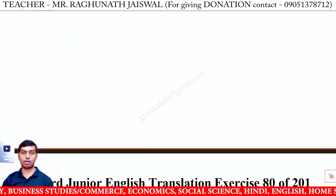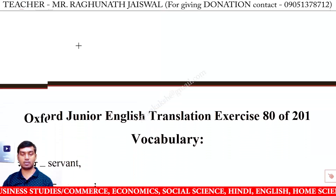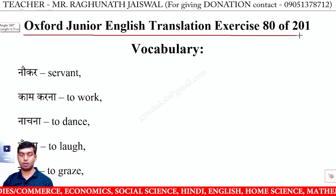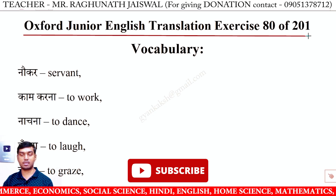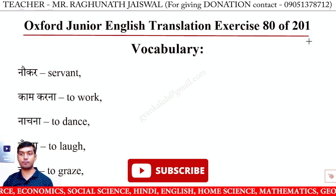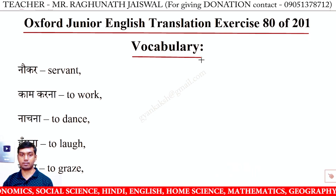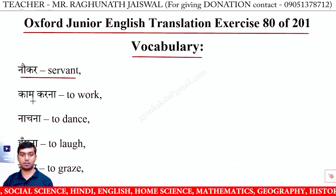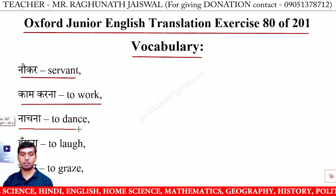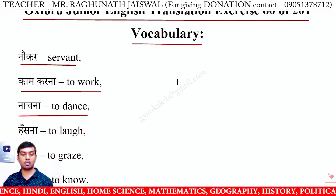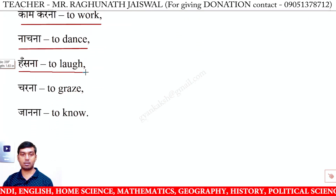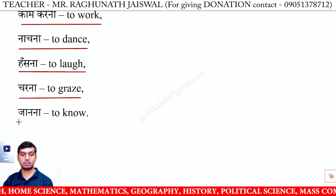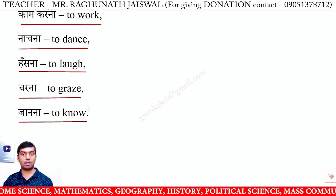Let's first look at the vocabulary section. After that, we will see more solved examples. Oxford Junior English Translation Exercise 80 of 201 — Vocabulary: नौकर — servant; काम करना — to work; नाचना — to dance; हँसना — to laugh; चरना — to graze; जानना — to know.